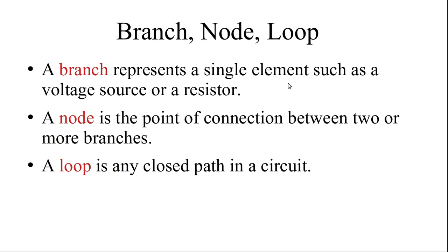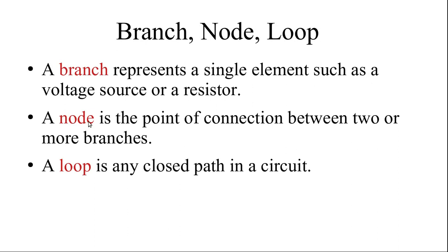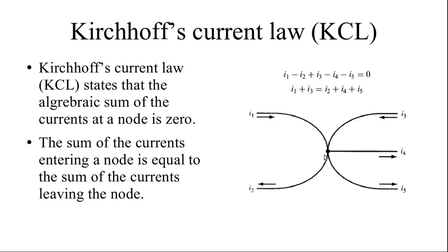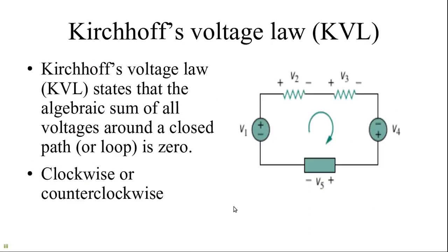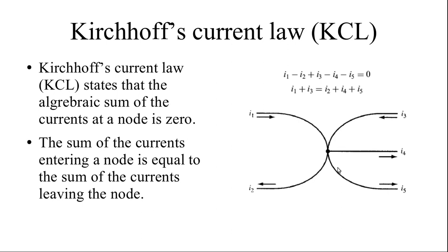You should know what a branch, node, and loop are. A branch is a single element like a voltage source, resistor, or capacitor. Looking at the diagram, each individual element is one branch. A node is a point where multiple branches connect — the point of connection between two or more branches. In the diagram, one node has five branches connected to it. A loop is a closed path of an electric circuit.